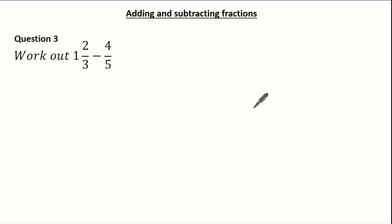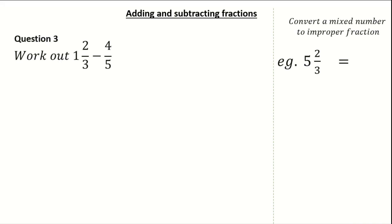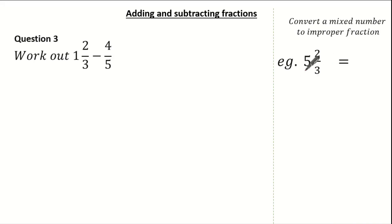Let's have a look at a past exam question. We're asked to work out 1 and 2 thirds, take away 4 fifths. Before we do this question, let's have a look at some key words. A mixed number is a number which consists of a whole number and a fraction. An improper fraction is where the numerator value is greater than the denominator value. Let's look at converting a mixed number into an improper fraction — we simply multiply the whole number by the denominator and add the numerator.